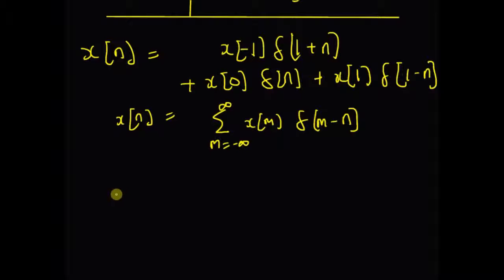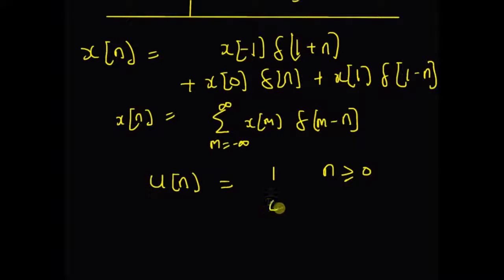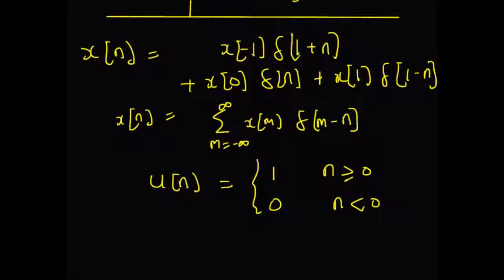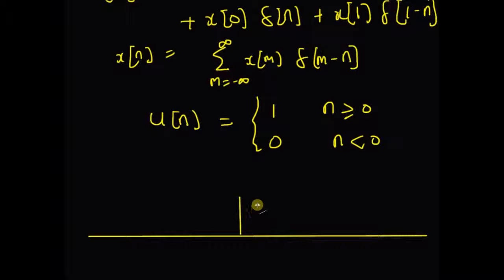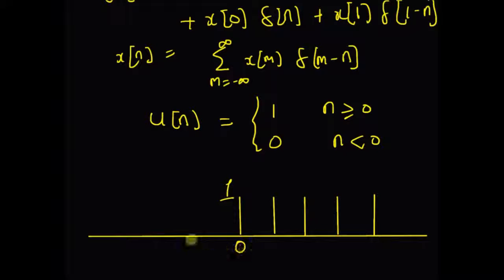A classic example for this decomposition is the representation of the unit step signal. The unit step sequence u of n equals one for values of n greater than or equal to zero, and zero for values of n less than zero. The unit step sequence is graphically represented as follows: all values are equal to one for n greater than or equal to zero, and zero for n less than zero.